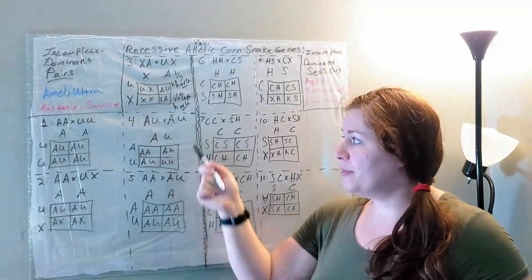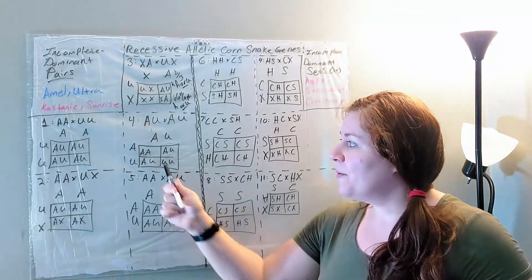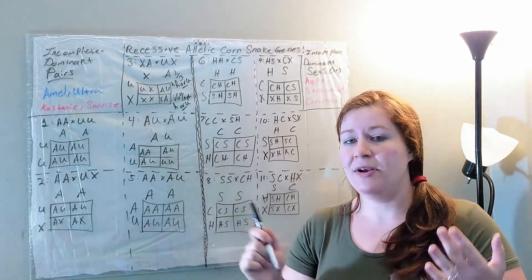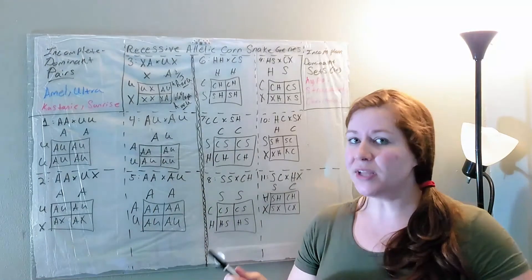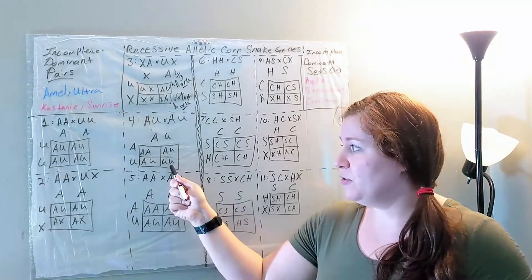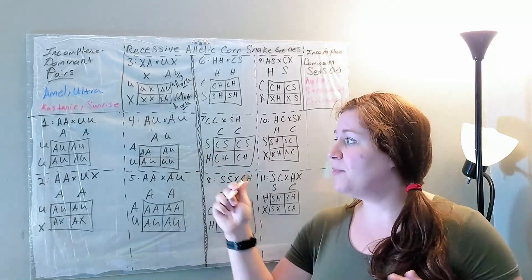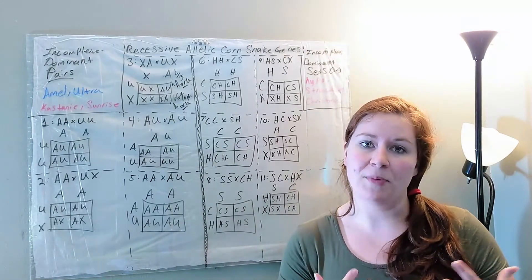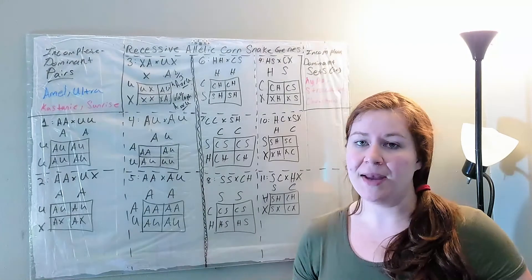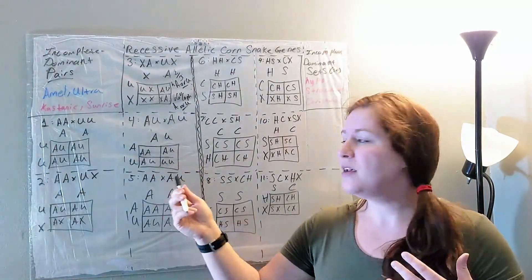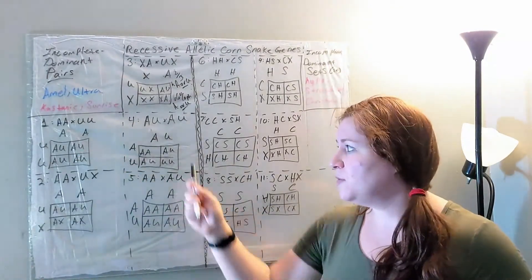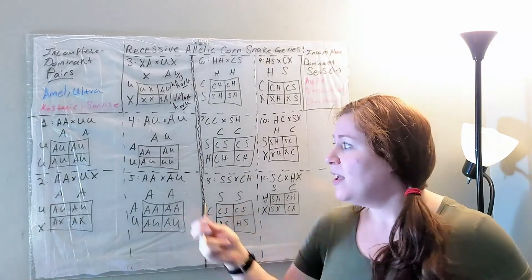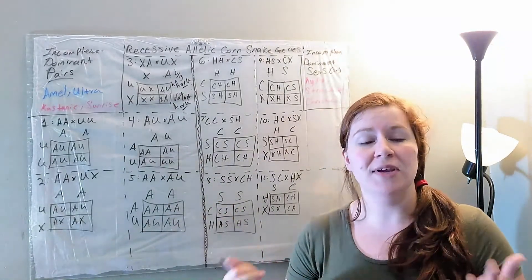Pair number four is an Ultramel to an Ultramel, one of my favorite breedings for variety. You get one quarter Amels, one quarter Ultras, and half Ultramels. Remember that the visual Amels will not be het Ultra or possibly het Ultra, and the Ultras will not be het Amel. When a pure Amel appears it can never create a pure Ultra, and vice versa. Breeding two Ultramels together gives pure Amels, pure Ultras, and 50% het for both Amel and Ultra — which makes them visual Ultramels.